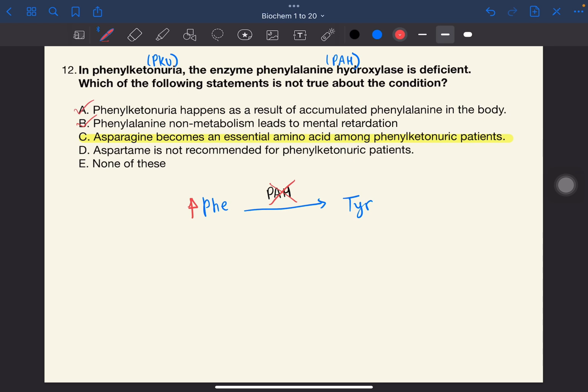Since the patient can't synthesize tyrosine, instead of being non-essential, tyrosine becomes an essential amino acid. So this is not asparagine. This is tyrosine.